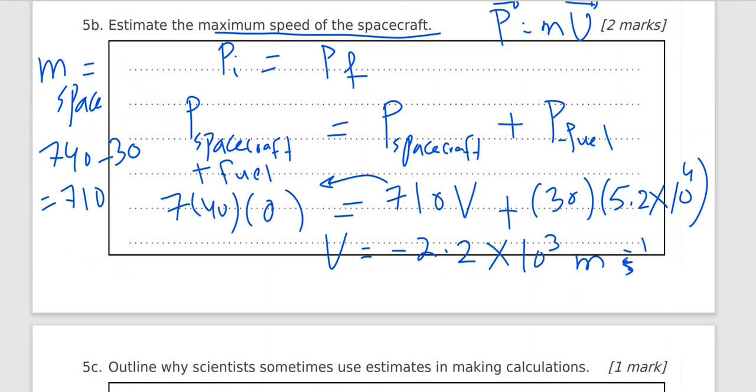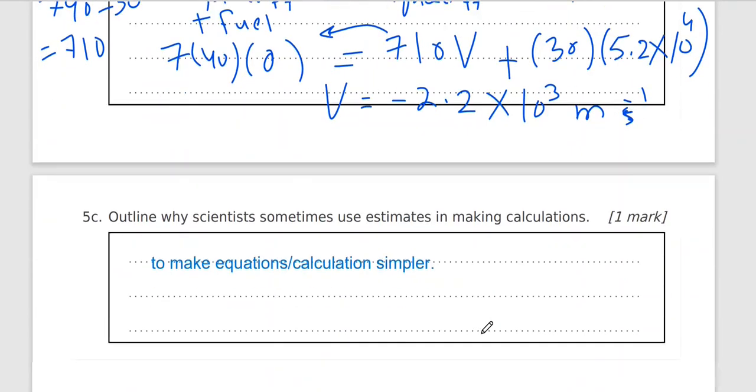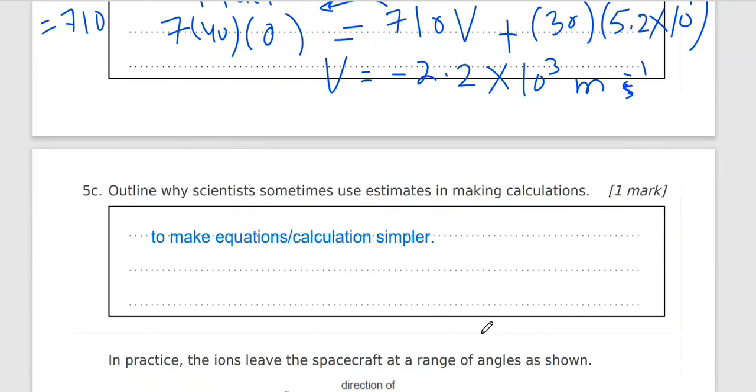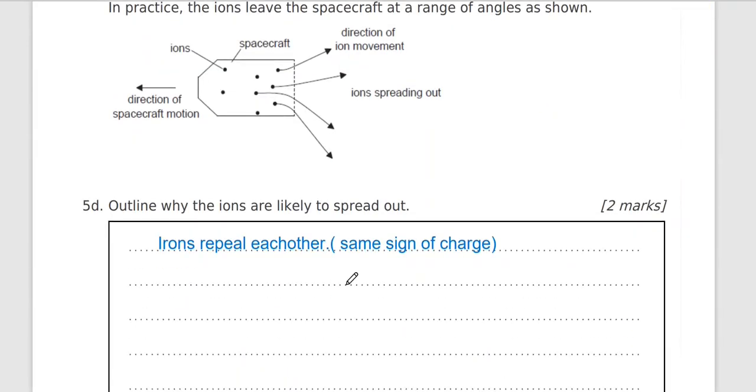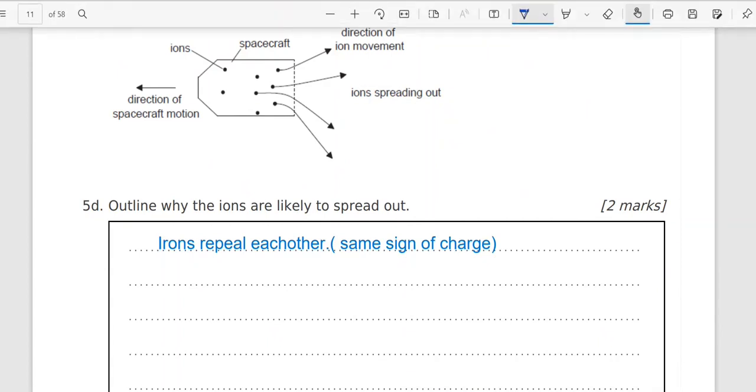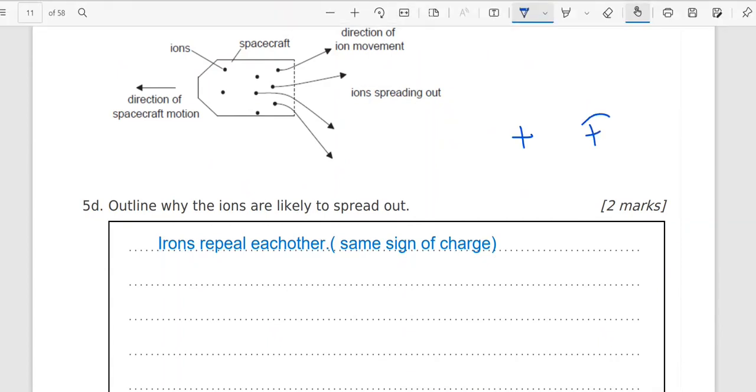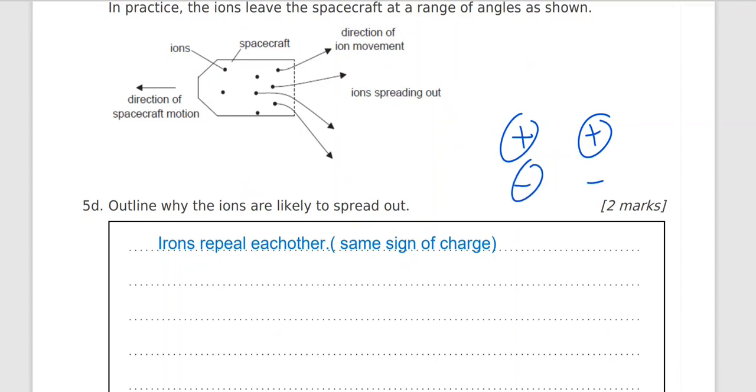Outline why scientists sometimes use estimates in making calculation to make their calculation simpler. Okay, the rest of the questions easy. Outline why ions are likely to spread out because we have positive and negative. Okay, ions they will have the same signs positive positive and positive they repel, negative and negative they repel. So same sign they repel, so same signs they repel, that's why they spread out.